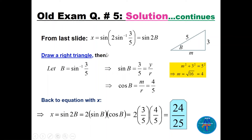Let B = sin⁻¹(3/5), so x = sin(2B). From sin B = 3/5 (opposite over hypotenuse), we find the adjacent side = 4, so cos B = 4/5. Using the double angle formula: sin(2B) = 2 sin B · cos B = 2 · (3/5) · (4/5) = 24/25. Therefore x = 24/25.